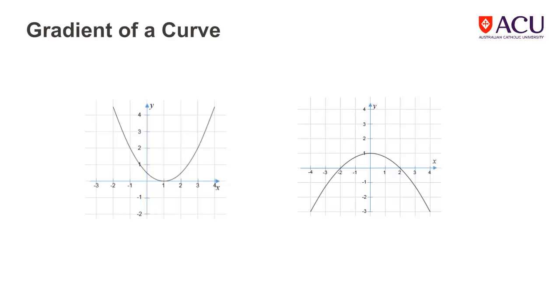When exploring the gradient of a curve, the problem is that the slope is not constant. It changes as we travel along the curve from left to right. So, how can we calculate the slope or gradient of a curve?